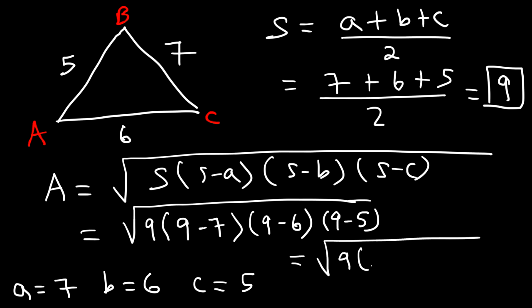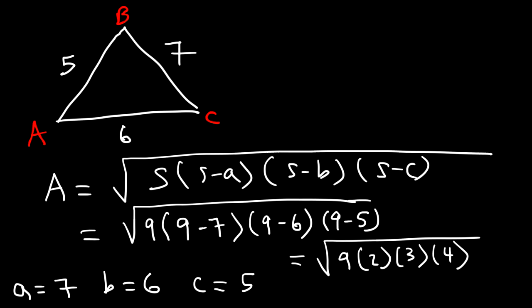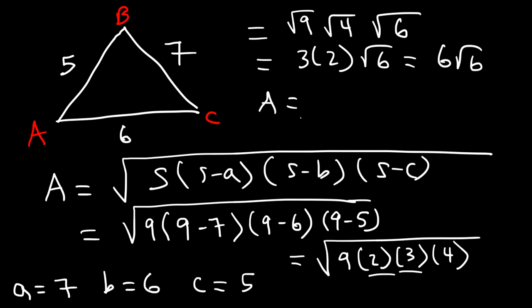So 9 minus 7 is 2, 9 minus 6 is 3, 9 minus 5 is 4. Now let's see how we can simplify this. So what we have is the square root of 9 times the square root of 4, and 2 and 3 are not perfect squares, so I'm going to multiply it and leave it as the square root of 6. The square root of 9 is 3, the square root of 4 is 2, so the area is 6 root 6, which as a decimal, that's about 14.7 square units.